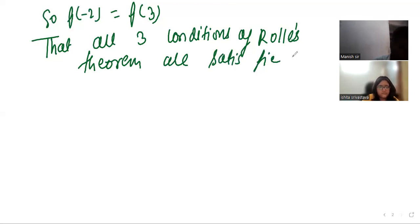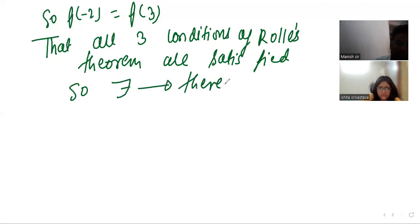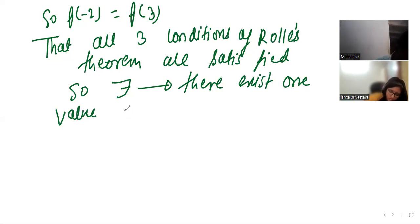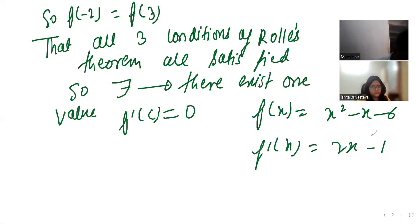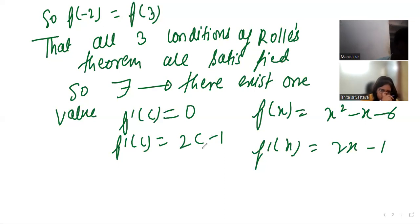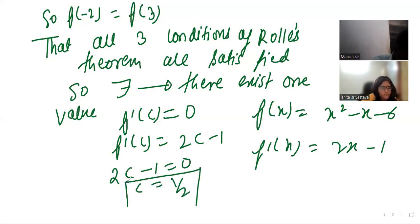Since all three conditions of Rolle's theorem are satisfied, there exists at least one real number c in (-2, 3) such that f'(c) = 0. Differentiating the function, f(x) = x² - x - 6 gives f'(x) = 2x - 1. Substituting c, we get f'(c) = 2c - 1 = 0, so c = 1/2. This value satisfies Rolle's theorem, and thus the theorem is verified.